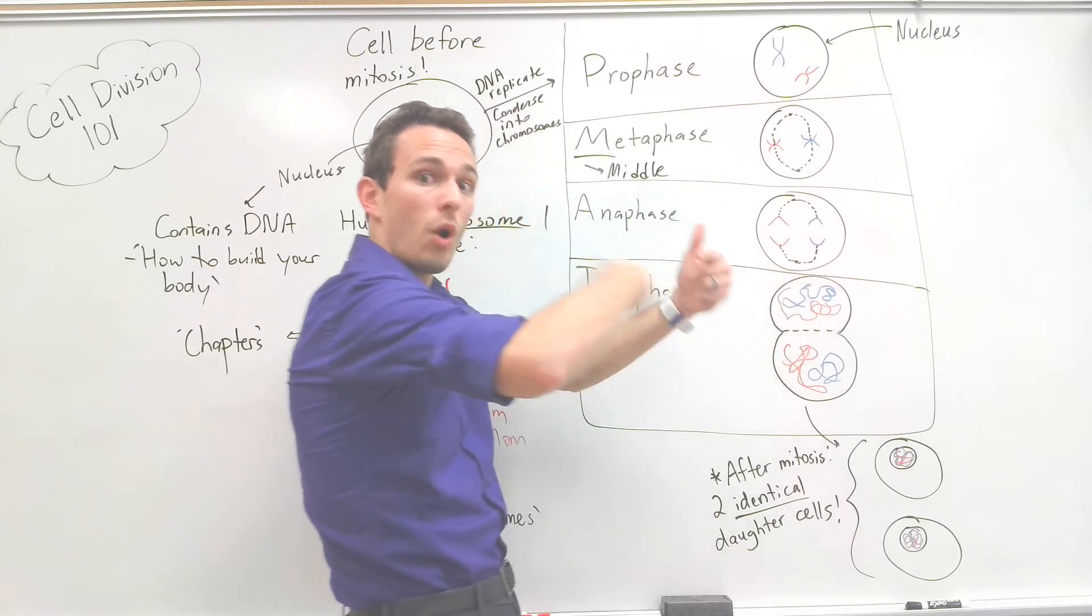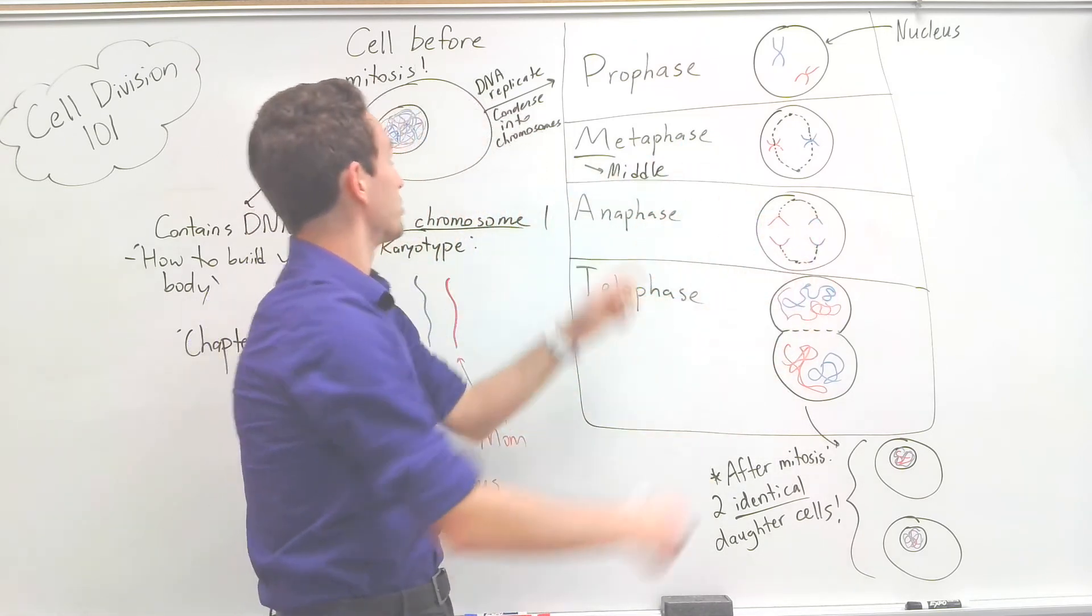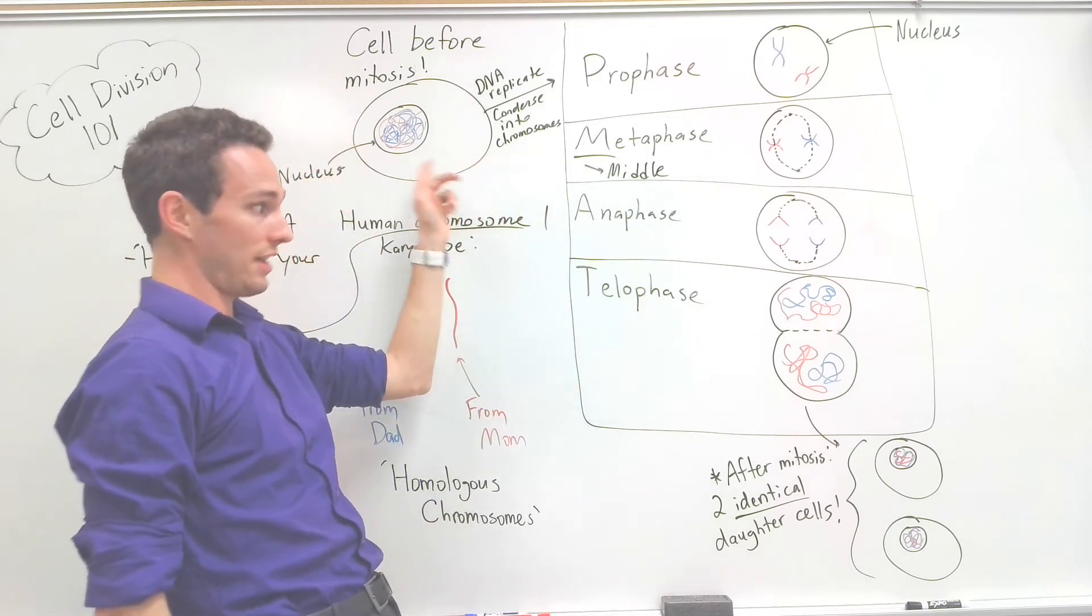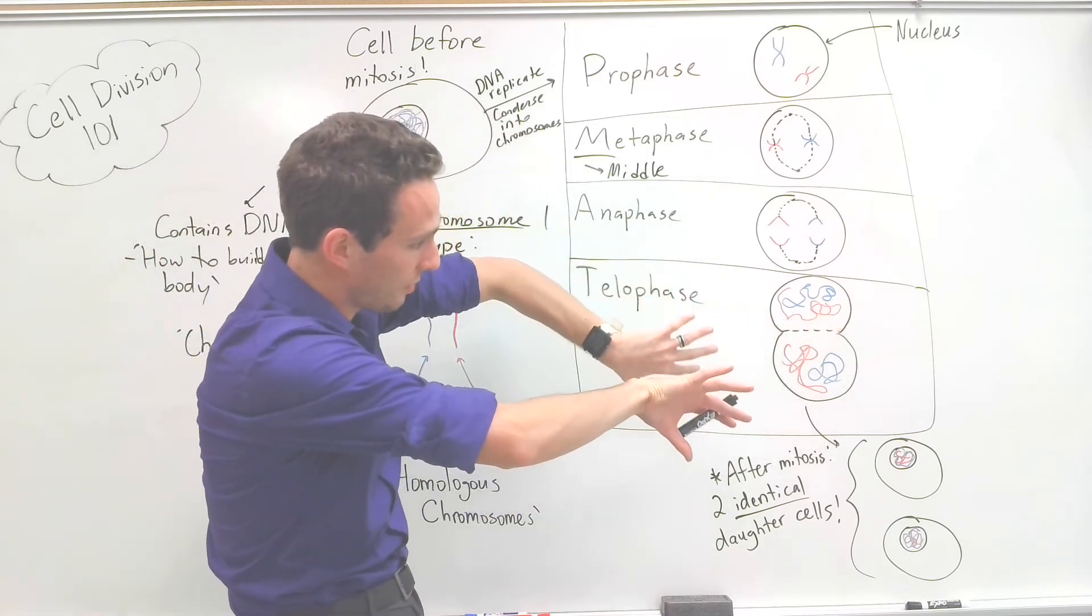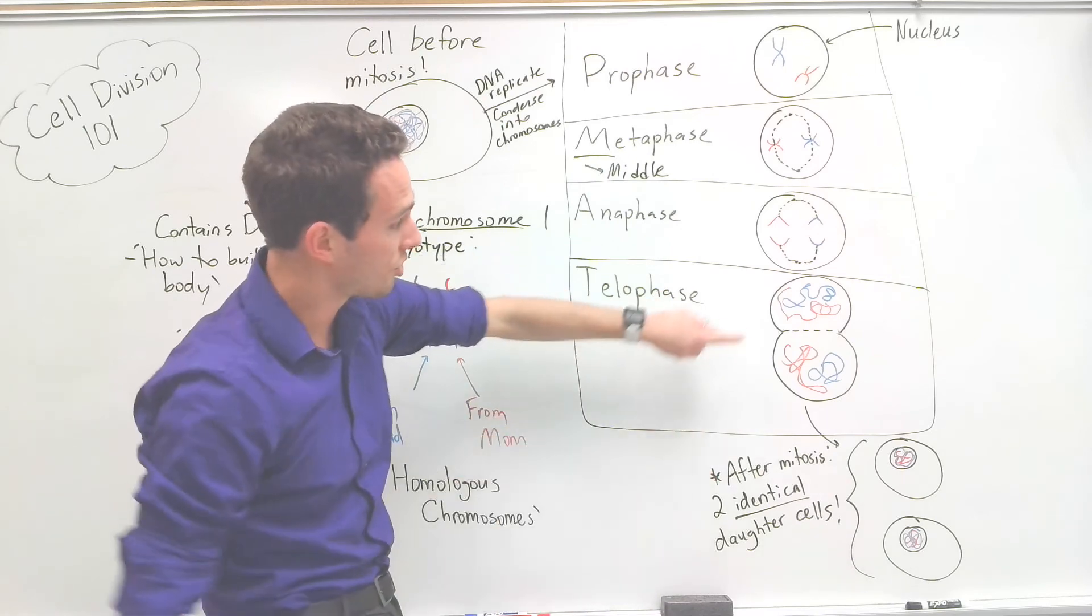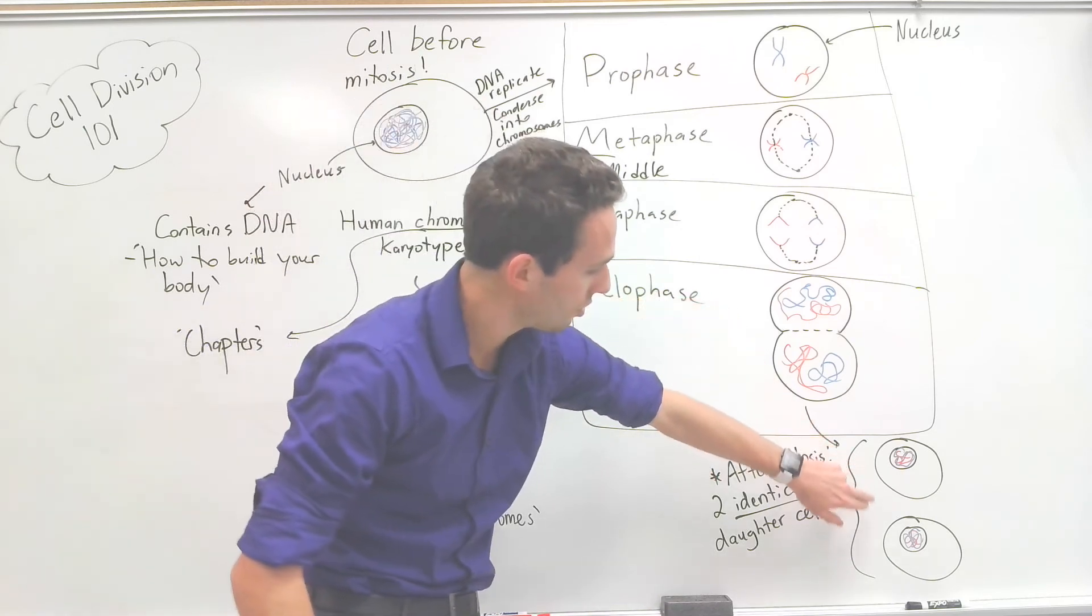And then finally, telophase is when—look at what's happening—the chromosomes are starting to unwind. They're starting to uncondense and look like what we had at the beginning. And they're also splitting, so they're severing the cytoplasm between the two of them, so that eventually we form two identical daughter cells.